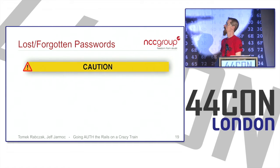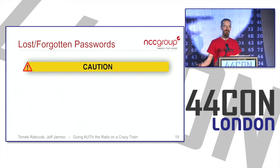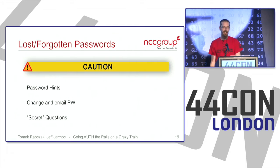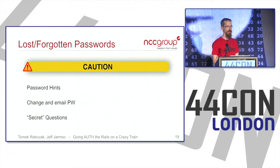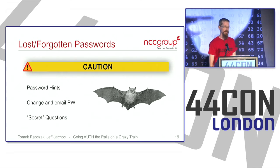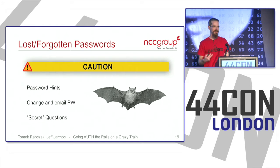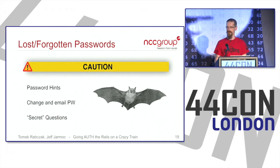Lost and forgotten passwords are an area where many applications have problems — it's easy to overlook. Approaches I see are password hints, sending changed passwords via email — leaving plain text credentials in the user's inbox — and secret questions, which I call 'Facebook questions': things like mother's maiden name, street they grew up on, or favorite food — all easily searchable. These approaches are generally pretty weak.